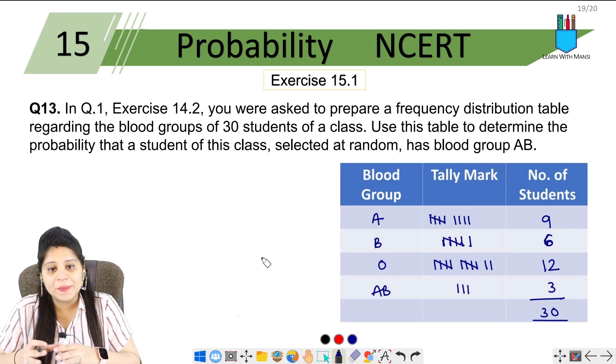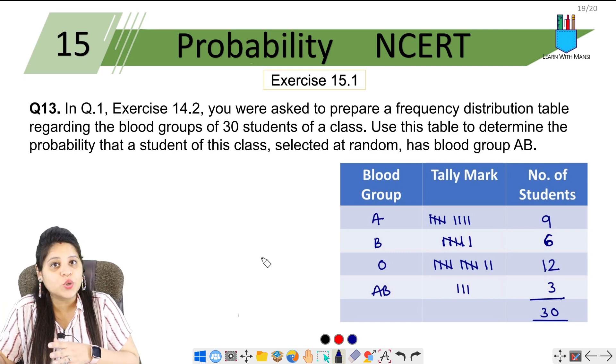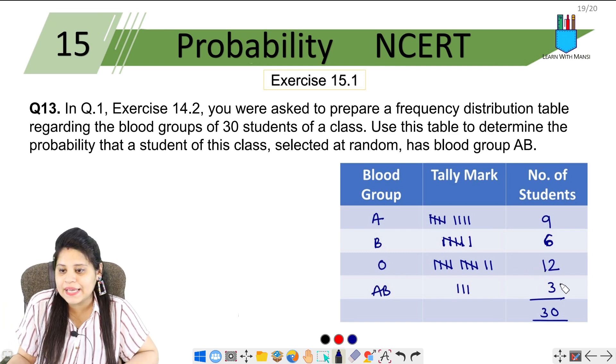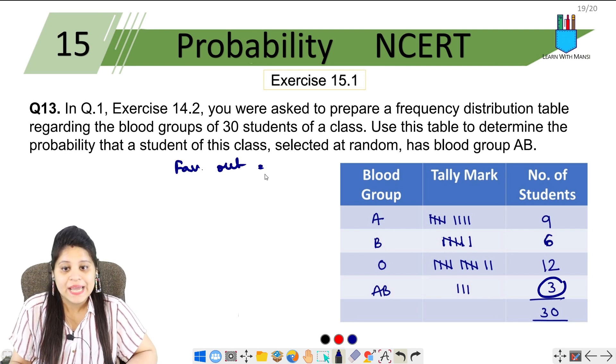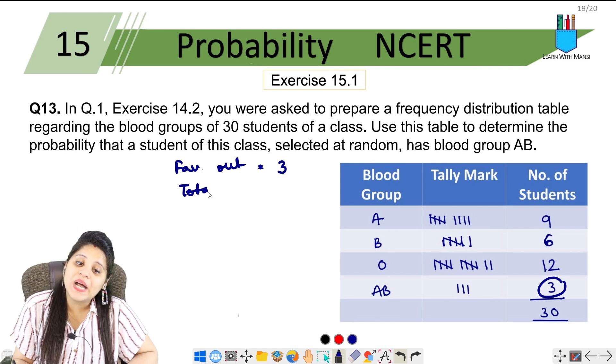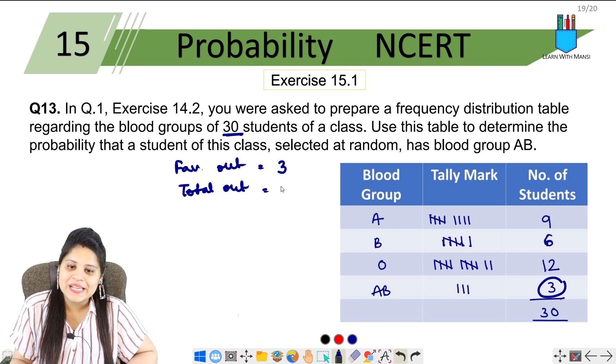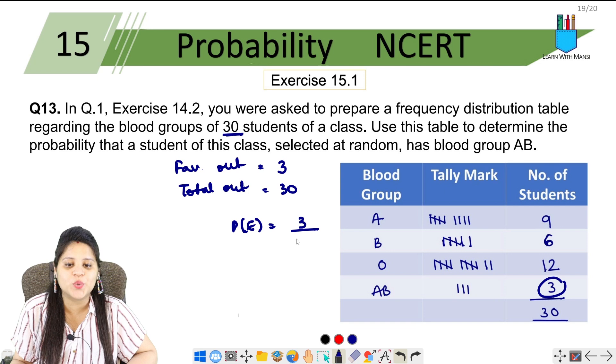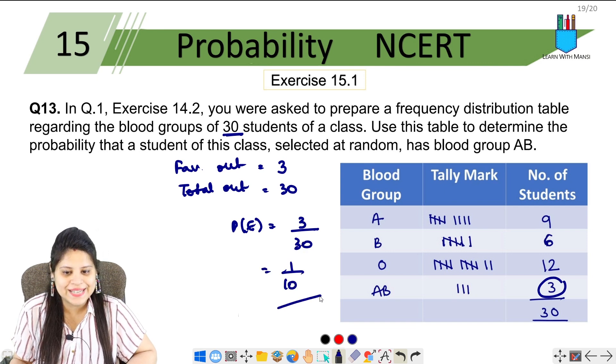So look, for AB blood group, there were three students. So our favorable outcome is 3. Total number of students - there were 30, this is 30. Therefore probability will be favorable outcome upon total number of outcomes: 3/30.